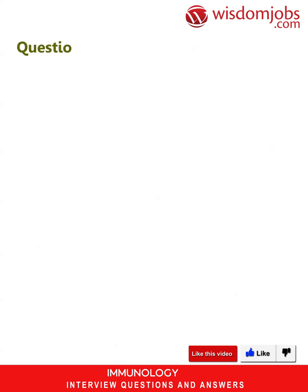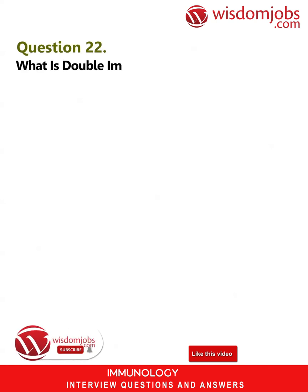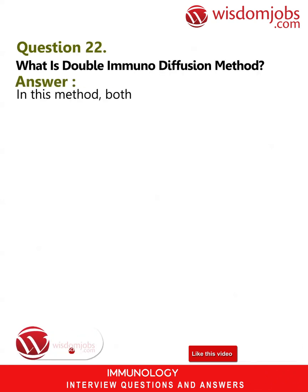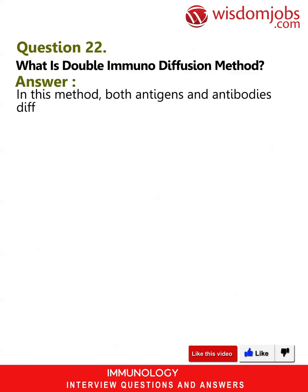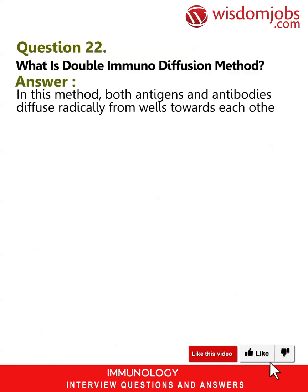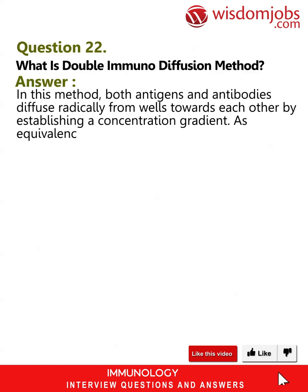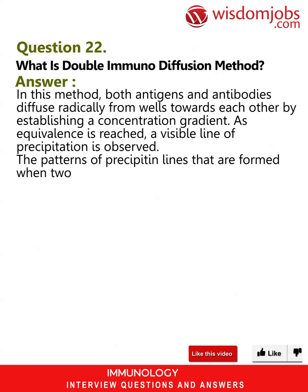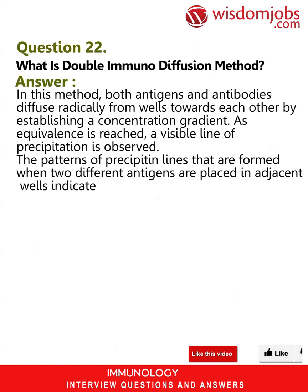Question 22: What is the double immunodiffusion method? Answer: In this method, both antigens and antibodies diffuse radially from wells towards each other, establishing a concentration gradient. As equivalence is reached, a visible line of precipitation is observed. The patterns of precipitin lines formed when two different antigens are placed in adjacent wells indicate whether they share any common epitope or not.